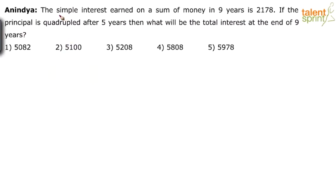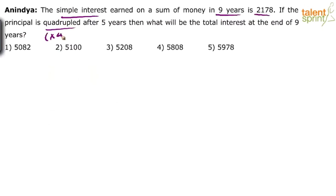Just understand what is given. The simple interest for 9 years is 2178. If the principal is quadrupled after 5 years — what does quadrupled mean? It means it is made 4 times. The principal is made 4 times after 5 years.